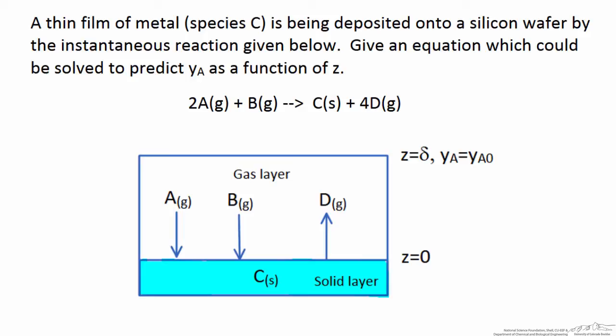Here we have a thin film of metal, which we are calling species C, and it is being deposited onto a silicon wafer by the instantaneous reaction that is given below. We want to come up with an equation which could be solved to predict the mole fraction of A as a function of z.